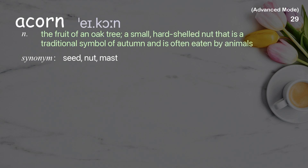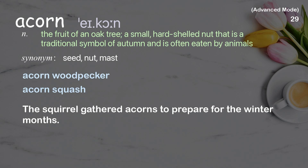Acorn: the fruit of an oak tree; a small, hard-shelled nut that is a traditional symbol of autumn and is often eaten by animals. Examples: acorn woodpecker, acorn squash. The squirrel gathered acorns to prepare for the winter months.